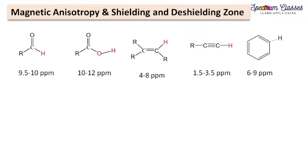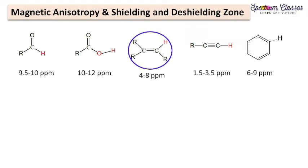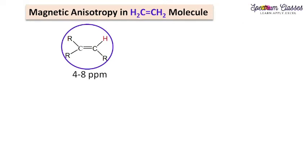I have collected some more examples: this is the aldehyde which resonates at a high ppm value, and this is the carboxylic acid group which resonates at 10 to 12 ppm. This is the substituted alkene molecule which resonates at 4 to 8 ppm, the alkyne molecule resonates a little lower, and this is the benzene ring or aromatic compounds. In this video I will start with the alkyne molecule and then move to the alkene.